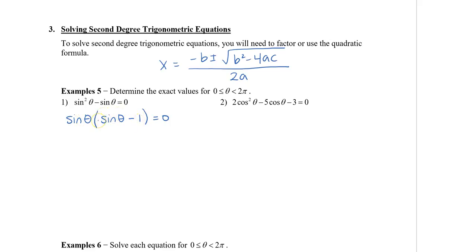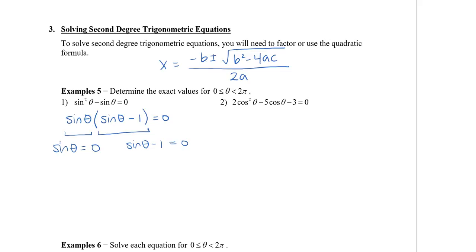Don't forget the minus 1. Always check — if I distribute the sine theta back into the brackets, I get sine squared theta, and then negative 1 gives me negative sine theta. So we now set each individual piece equal to 0. We have two factors here.